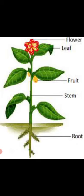The stem and root hold your plant firmly to the ground and allow it to stand upright. The stem grows upwards above the soil. It supports the plant and carries water and nutrients to different parts of the plant.